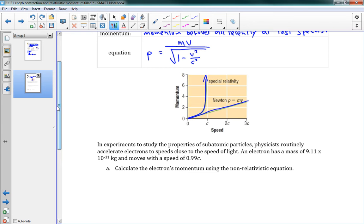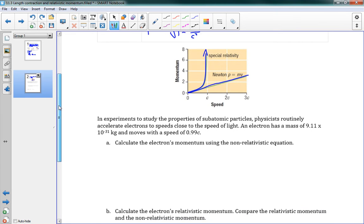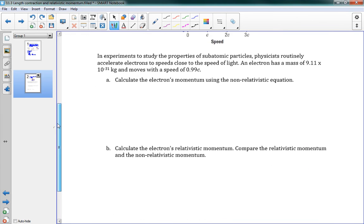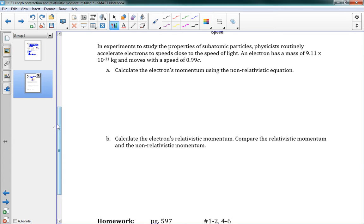Notice that in P, we actually have V on the top and V on the bottom. That's going to cause a bit of a different result than the other measures we've looked at so far. The problem says, in experiments to study the properties of subatomic particles, physicists routinely accelerate electrons to speeds close to the speed of light. An electron has a mass of 9.11 times 10 to the negative 31 kilograms and moves with a speed of 0.99 C. Calculate the electron's momentum using the non-relativistic equation.